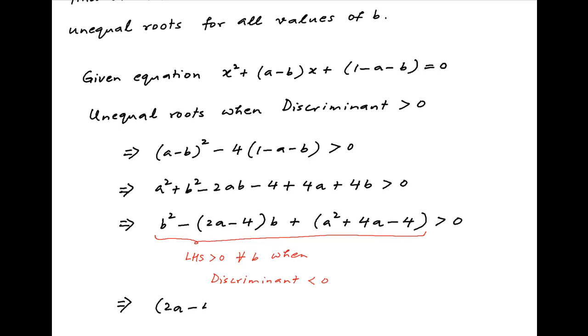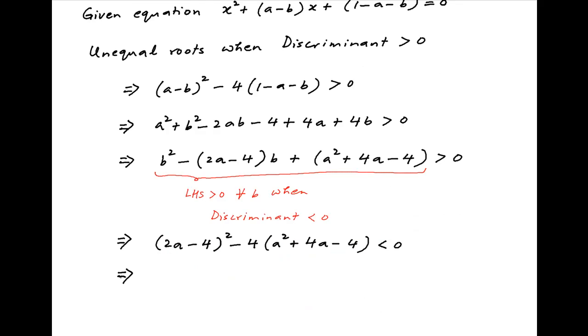This implies that (2a-4)² - 4(a² + 4a - 4) must be less than 0. Opening up the left-hand side we get 4a² - 16a + 16 - 4a² - 16a + 16 must be less than 0.